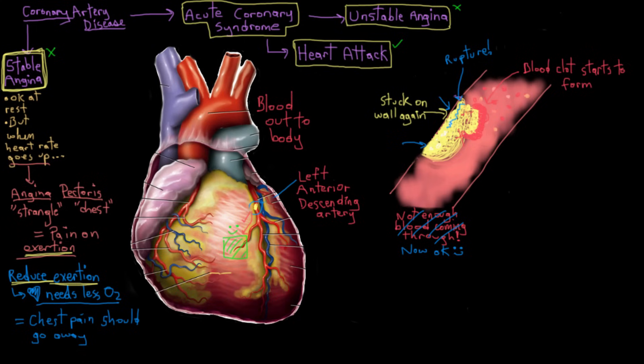But remember, now we have this plaque flapping around. So at any point, you could just lose blood supply to a downstream part of your heart temporarily. And so in this condition, unstable angina, you can get chest pain at rest. You don't actually have to exert yourself for chest pain to come on.